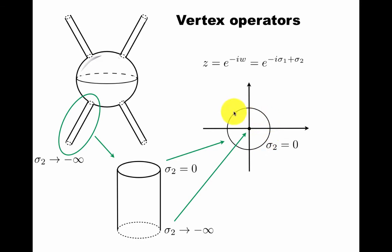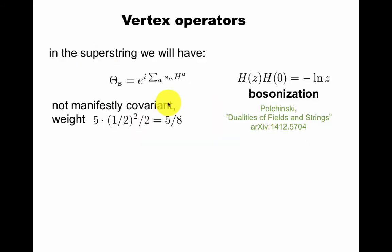Inserting a vertex operator at the origin, meaning a state coming in from time minus infinity, and scattering here in the scattering region, that will be at some finite value of the radial z. Vertex operators supposed to have weight one, this operator is not manifestly covariant, and it doesn't have weight one. So we'll have to solve this problem in the superstring. If you want to prepare for that, take a look in this review.